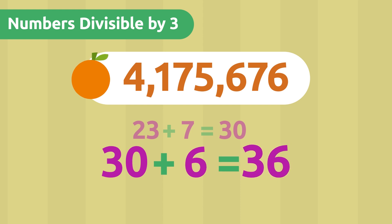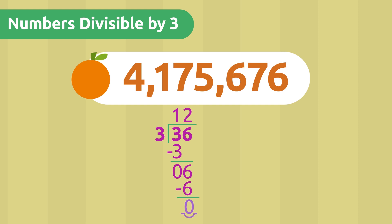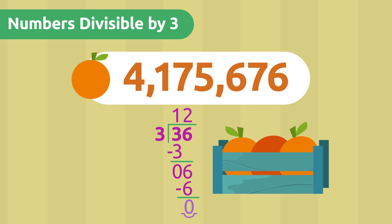Let's check if 36 is divisible by 3. Dividing 36 by 3, the remainder is 0. That means 36 is divisible by 3. Since 36 is the result of adding the digits of the number of oranges, applying the divisibility rule of 3 means that there will be none left over if we pack 3 in each box.